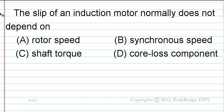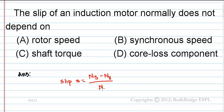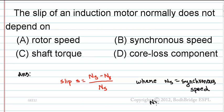Slip S equals (Ns minus Nr) divided by Ns, where Ns equals synchronous speed and Nr equals rotor speed. So, slip depends on synchronous speed and rotor speed.